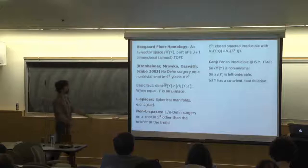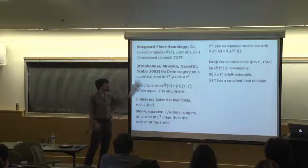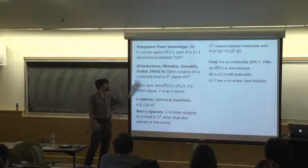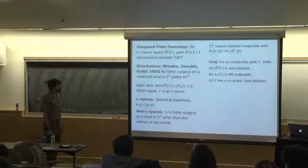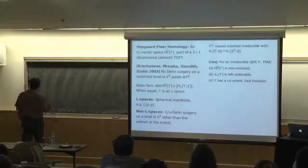There is a corresponding four-manifold invariant that will play a role. The first major application of these Floer homology theories — this is actually the monopole version of Floer homology — in 2003, Kronheimer, Mrowka, Ozsváth, and Szabó showed, answering a question that had been open for a long time, that no Dehn surgery on a non-trivial knot in the three-sphere yields RP3.